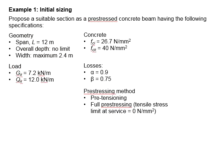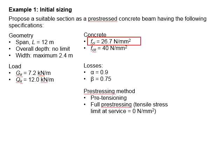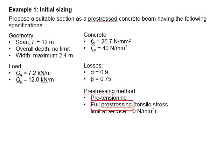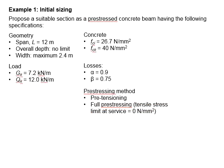The member is subjected to a UDL of GK = 7.2 kN/m and QK = 12 kN/m. The concrete strength at the transfer stage is 26.7 N/mm² and at the service stage will be 40 N/mm². In terms of losses, alpha is taken as 0.9 while beta is 0.75. The beam is a pre-tension beam meant for full prestressing, where tensile limits at the service stage equal 0 N/mm². You may pause the video to work out the solution.